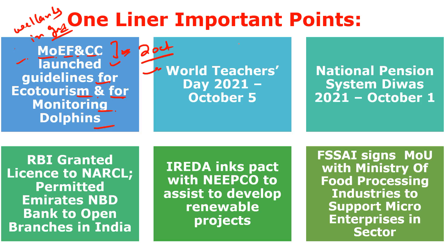World Teacher Day is observed on 5th October — not to be confused with National Teacher Day, which India celebrates on 5th September. UNESCO's World Teacher Day is annually observed on 5th October to celebrate teachers across the globe. The theme for 2021 is 'Teachers at the Heart of Education Recovery'. India celebrates National Teacher Day on 5th September to commemorate the birth anniversary of Bharat Ratna Dr. Sarvepalli Radhakrishnan, who was the first Vice President and second President of India.